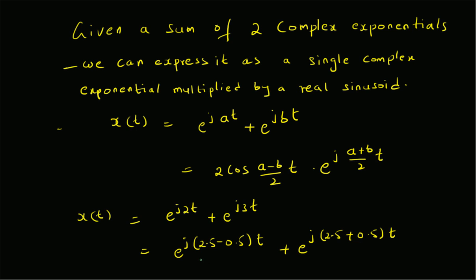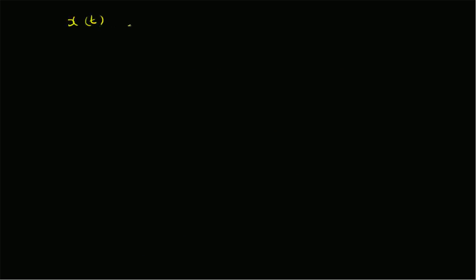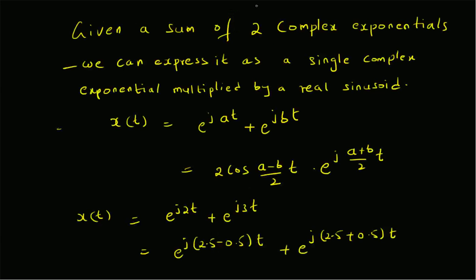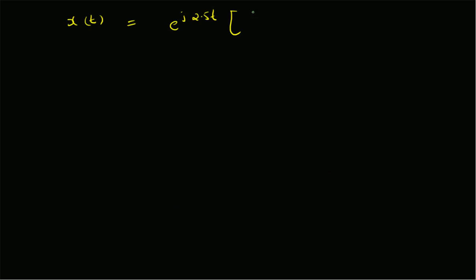So we can take the term e^(j·2.5·t) as a common term. Then x of t can be written as e^(j·2.5·t) as the common term, and we are left with two terms: e^(minus j·0.5·t) and e^(plus j·0.5·t).